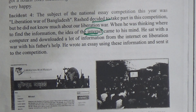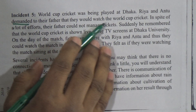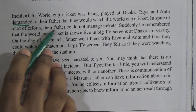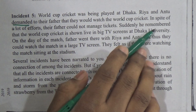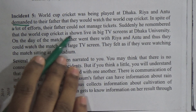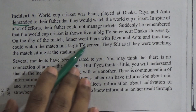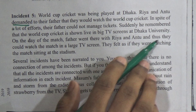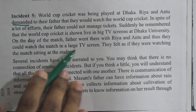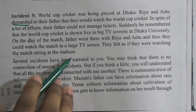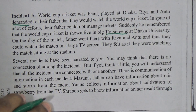Incident 5, the last incident for today: World Cup cricket was being played at Dhaka. Rhea and Omtu demanded to their father that they would watch the World Cup cricket. In spite of a lot of efforts, their father could not manage tickets. Suddenly, he remembered that the World Cup cricket is shown live on big TV screens at Dhaka University. On the day of the match, father went there with Rhea and Omtu, and they could watch the match on a large TV screen. They felt as if they were watching the match sitting at the stadium. Here, the TV screen is one kind of information technology.